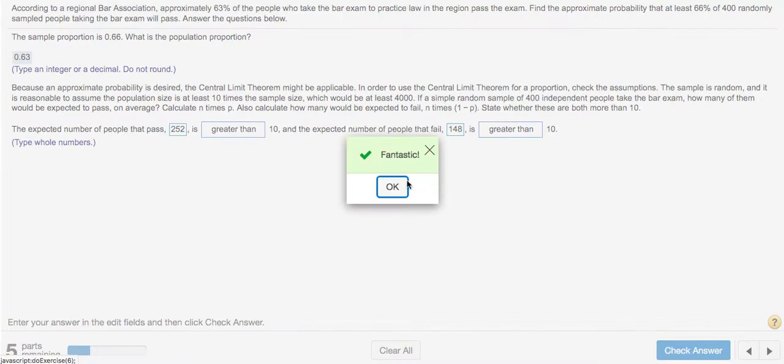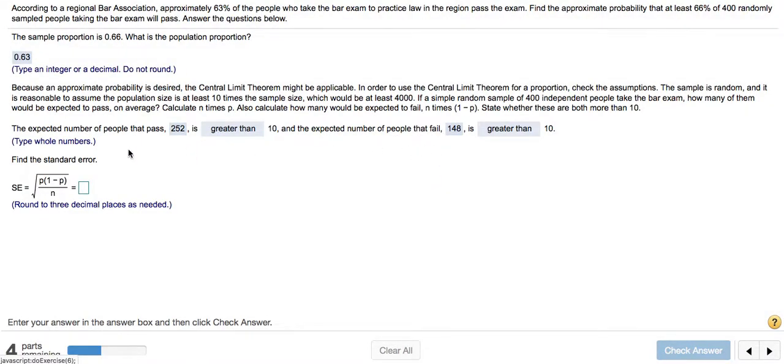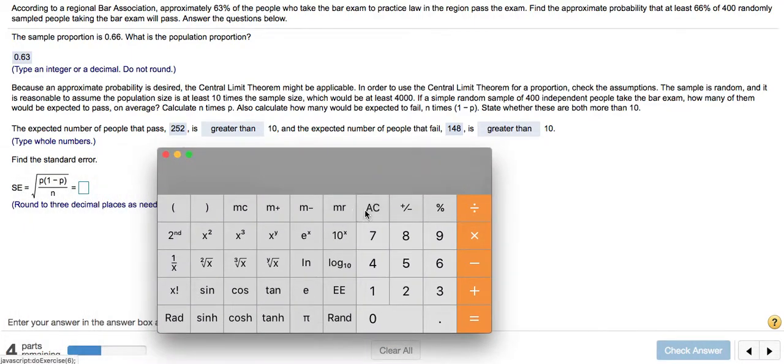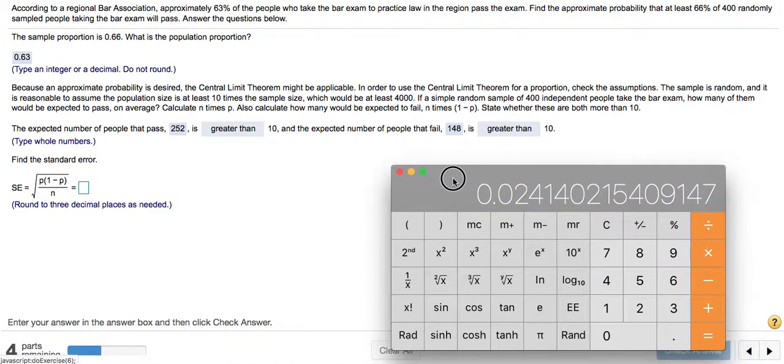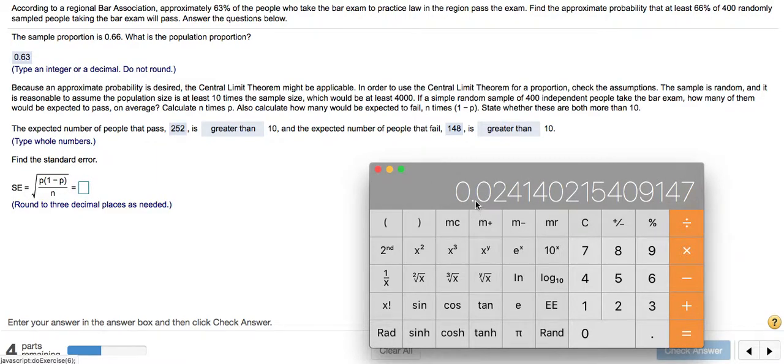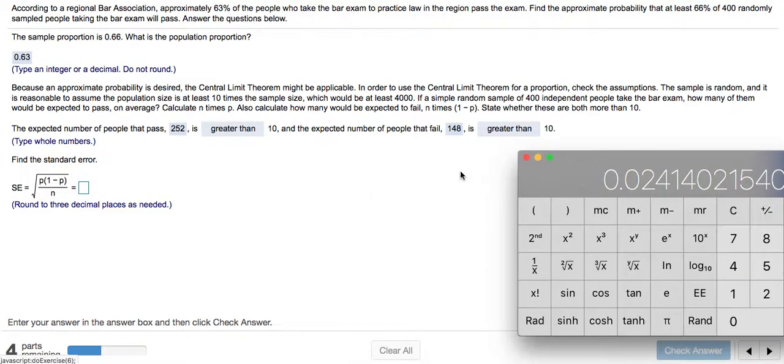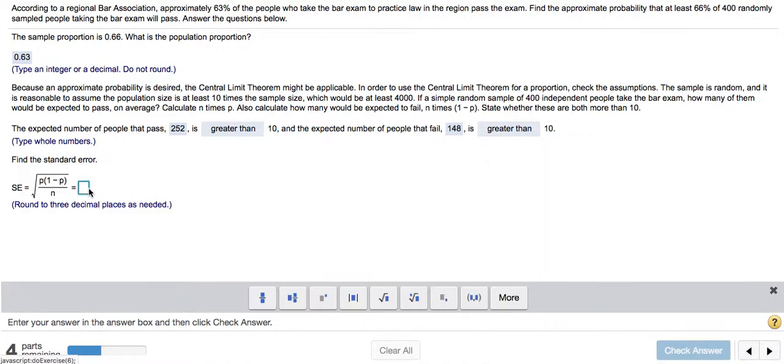So all conditions for the central limit theorem have been met. Now they're also providing us with the formula for the standard error, so I'm going to go ahead and compute that too. That's p, which is 0.63 times 1 minus p, which is 0.37, divided by the sample size of 400, and then we take the square root of this number. Rounding to three decimal places: 0.024.